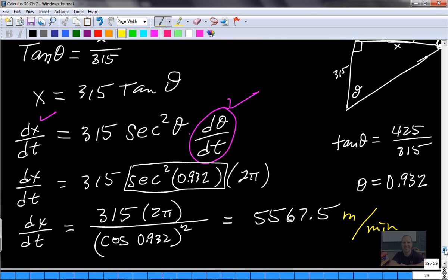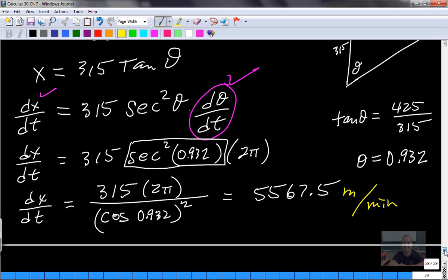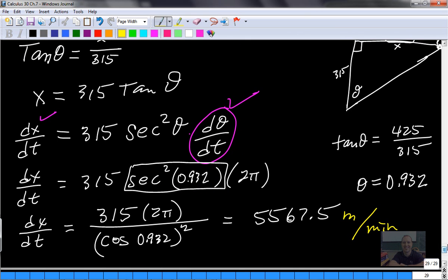So then our rate of change that we're going to end up with should be in meters per minute. You'd write a little word sentence, just a phrase or two. The rate of change of the beacon is 5567.5 meters per minute. Just something like that. Questions?